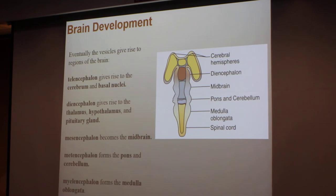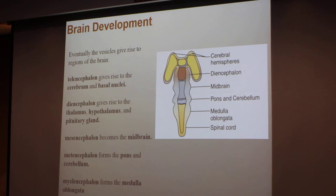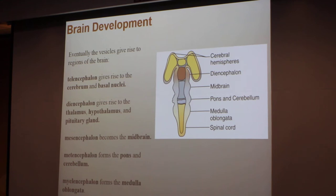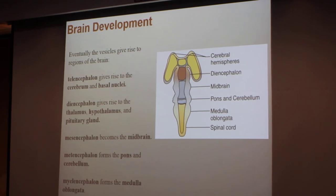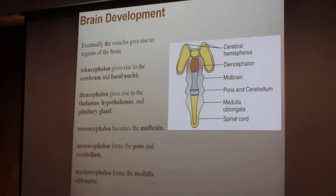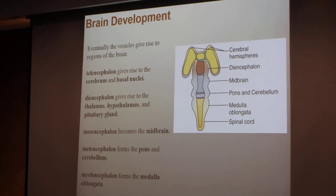We'll go over just the names, and then we'll get some function of each one. The hypothalamus comes from the diencephalon, which is the most important part of the five. The metencephalon forms the pons and cerebellum, and finally the medulla comes from the myelencephalon.